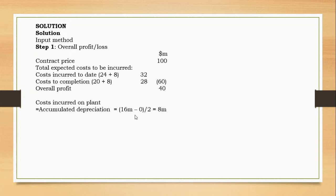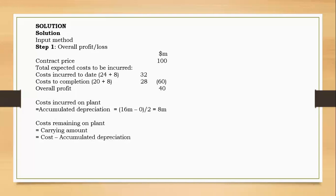So we have 8 million in accumulated depreciation, which stays as costs incurred. The remaining carrying amount on the plant — since the residual value is zero — is cost minus accumulated depreciation, which is 8 million. So you add that to get 32 here, and 20 plus 8 gives 28. The sum of total costs would be 60. 100 minus 60 gives an overall profit of 40 million.